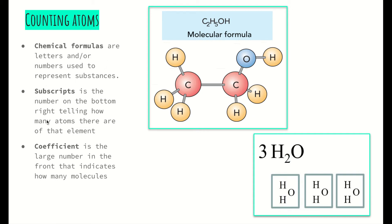Subscript is the number on the bottom right telling how many atoms there are of that element. So for example, C2H5O6 tells us there are two carbon atoms, five hydrogen atoms, one oxygen, and then there's one more hydrogen.